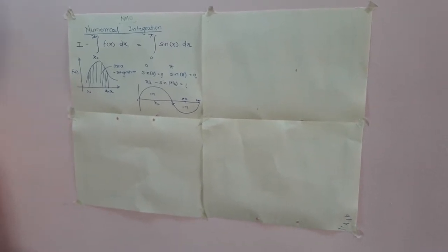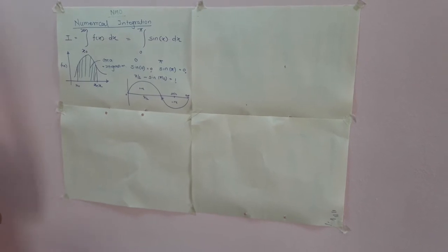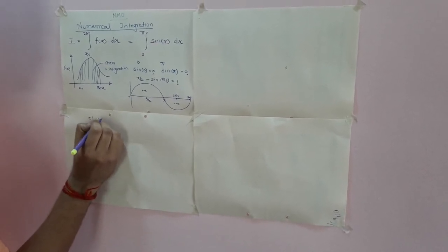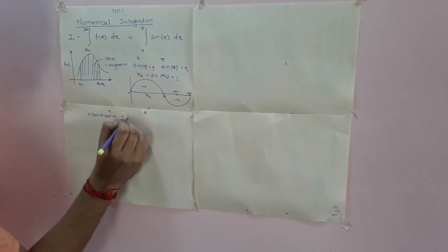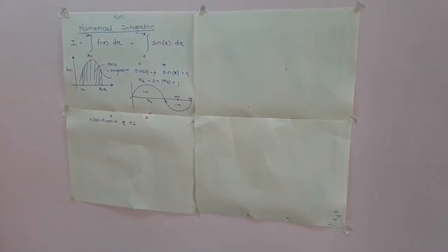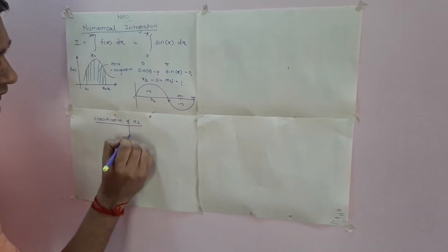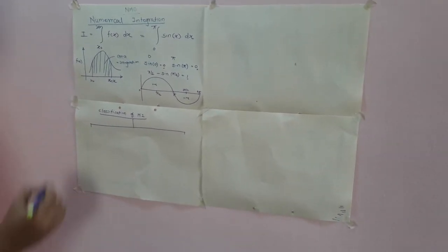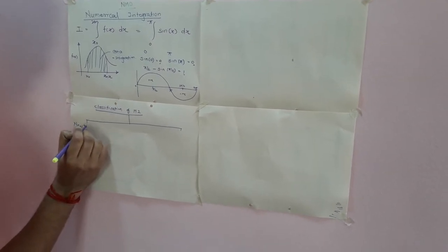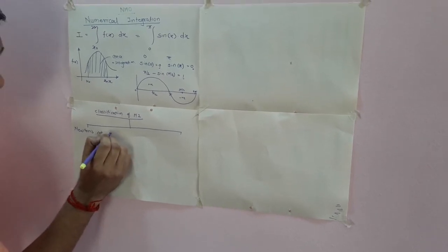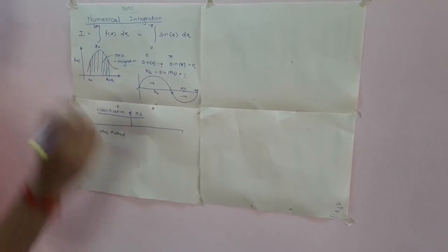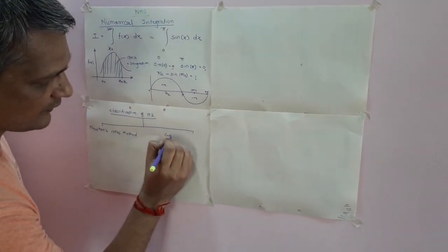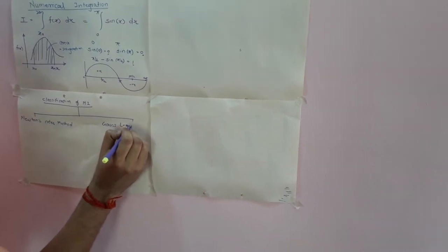Now we have understood how integration is done in 12th standard. Now we want to develop some numerical method for that. What are the different methods available for the evaluation of such integration? We will see the classification of numerical integration. It is broadly classified into two categories: the first category is Newton's Cotes method and the second category is the Gauss-Legendre formula.